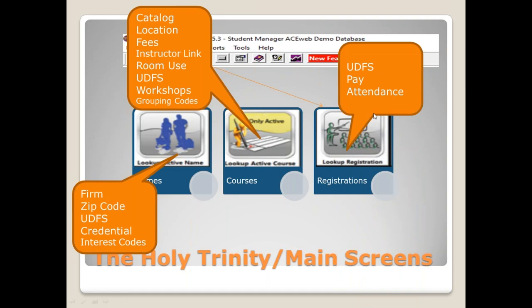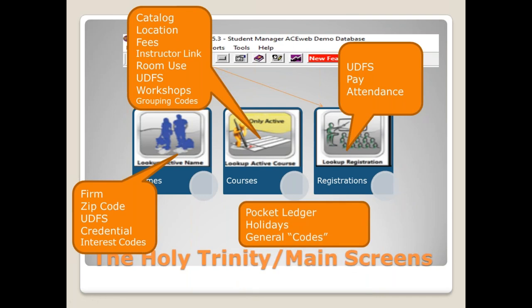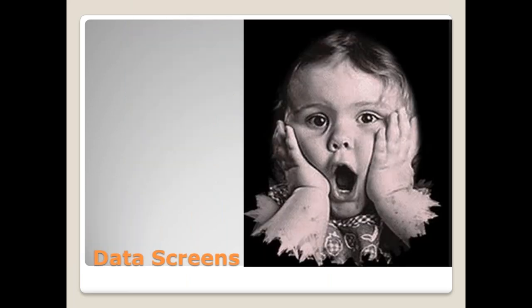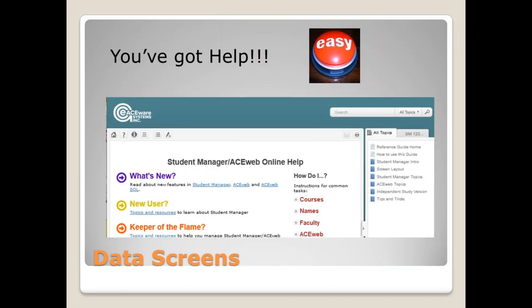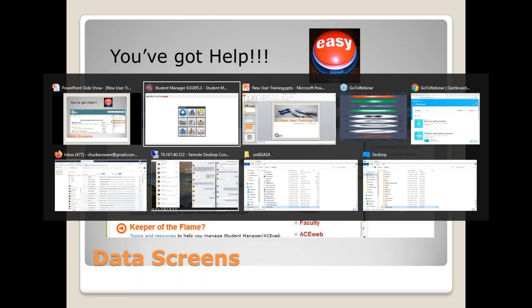Registrations include attendance records, the pay screen, and user defined fields. Altogether there are probably 25 to 30 different data entry screens that make up the entire system — plus pocket ledger, holidays, and general code screens. In the help guide there is a link called Screen Layout. Navigate to Help, click on Screen Layout, and you'll see all of the major screens. By hovering over a data element on the screen you can see the field name that particular element represents.